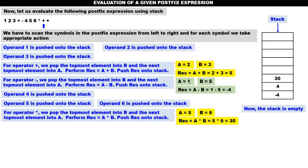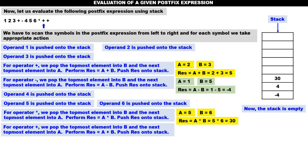Next symbol is plus — that is an operator. For operator plus, we pop the topmost element into B, and the next topmost element into A, then perform RES = A + B, and push RES onto the stack. The topmost element is 30 — 30 is taken into B. Next topmost element four is taken into A. Four plus 30 is 34. Now 34 is pushed onto the stack.